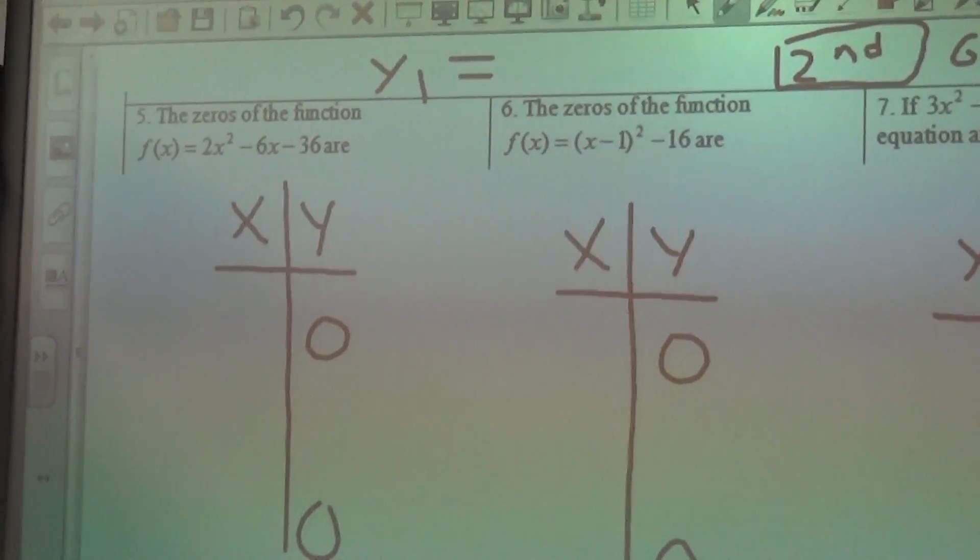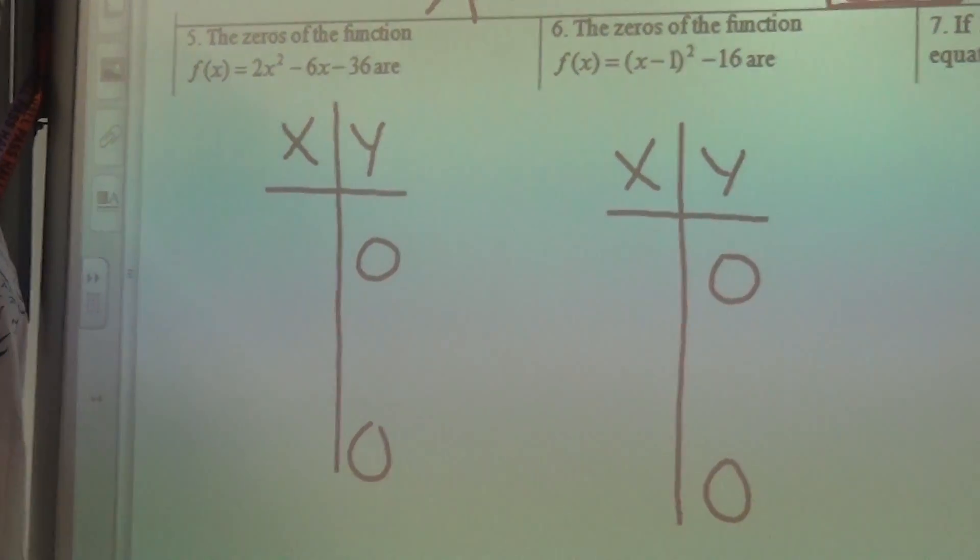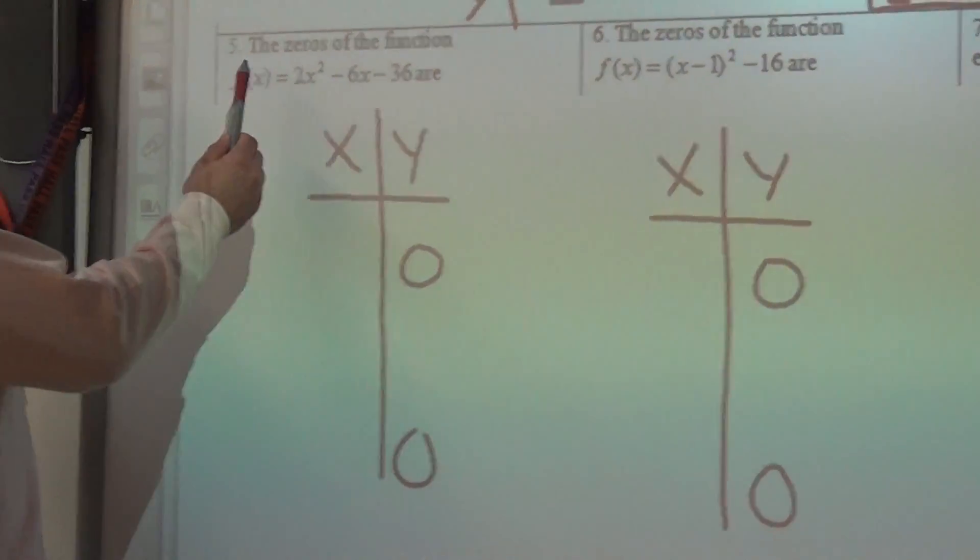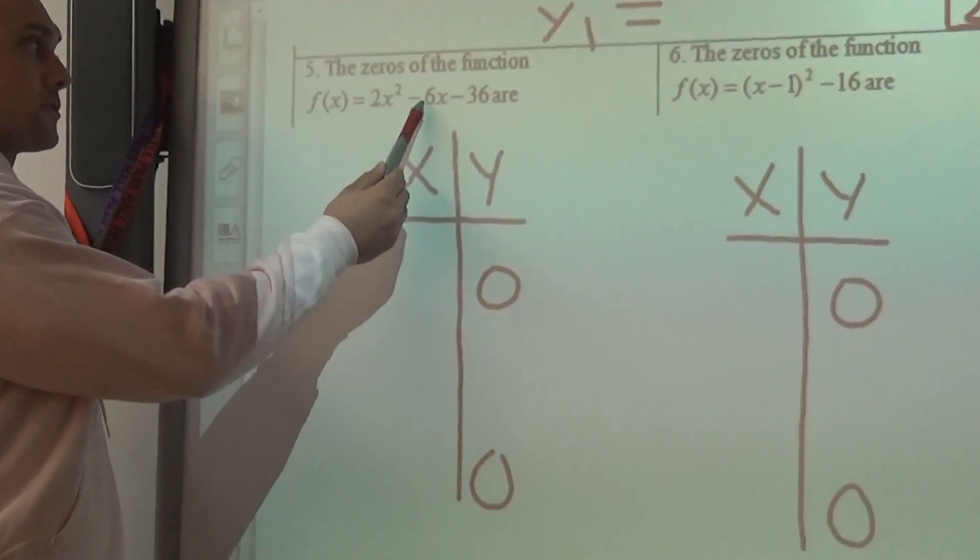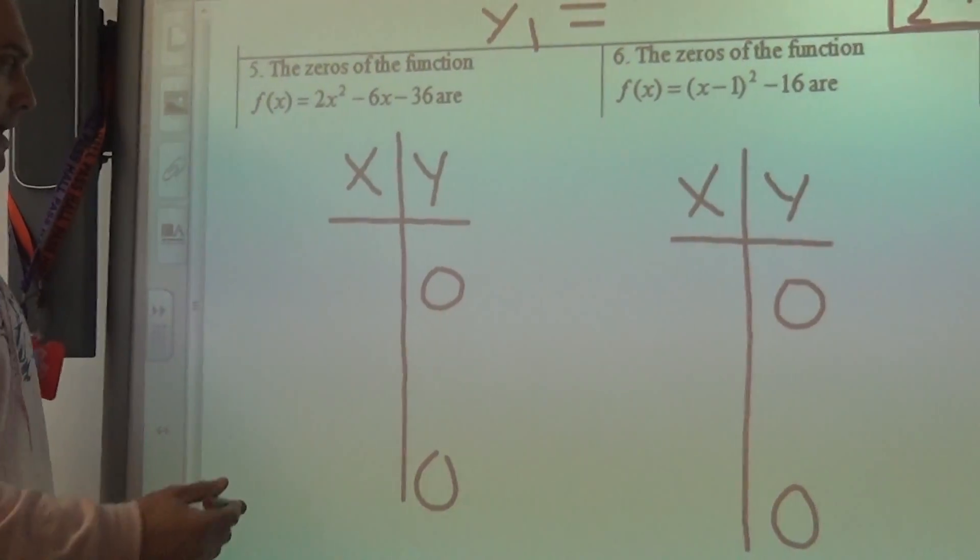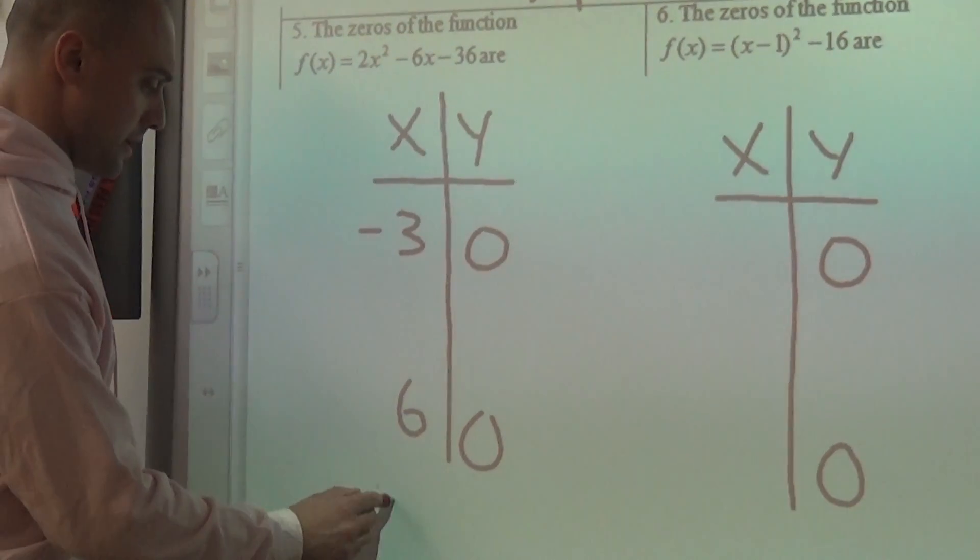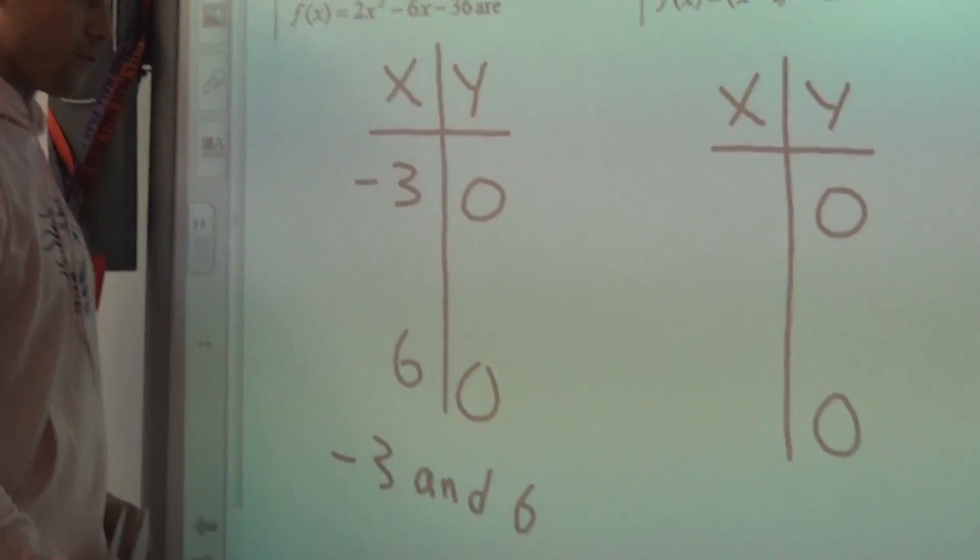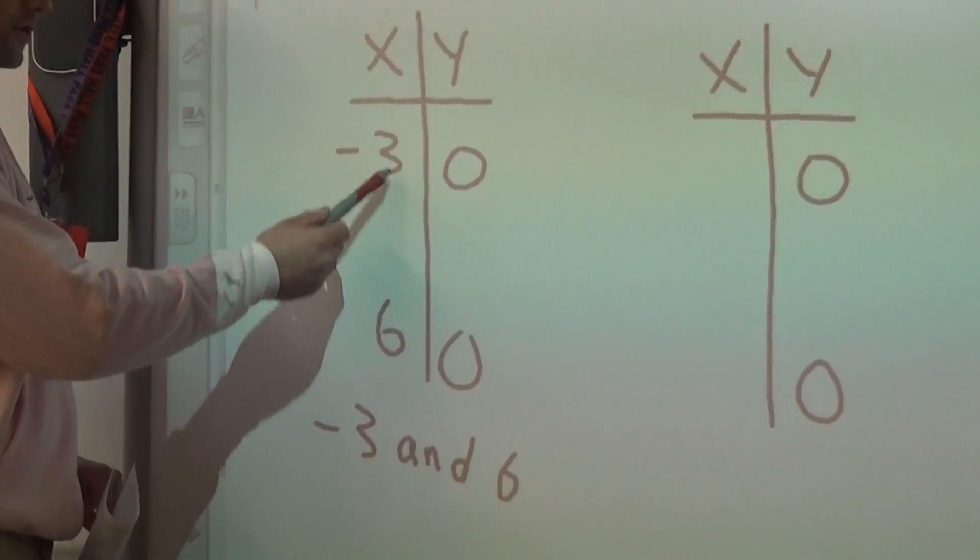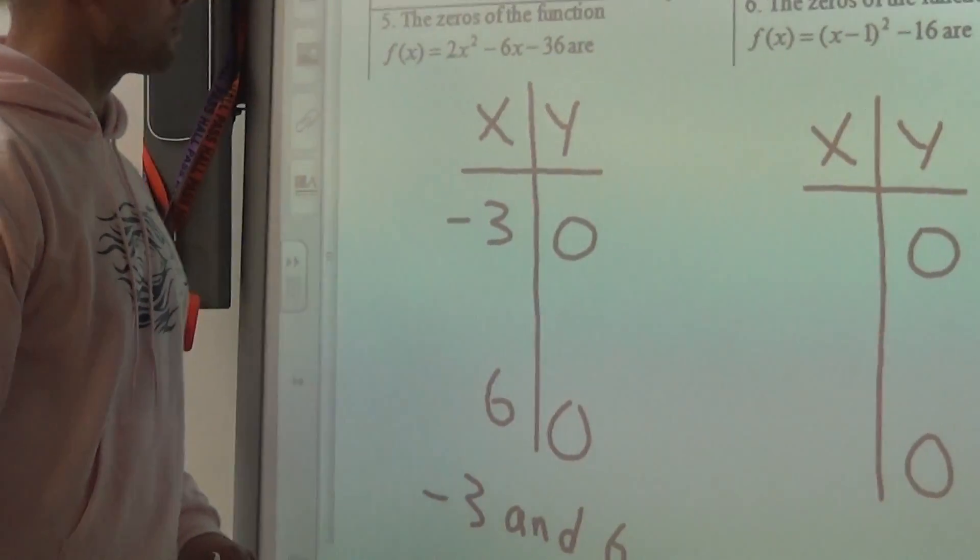So what you're looking for in each of these is where is the Y value equal to 0? So in number 5, we enter 2X squared minus 6X minus 36, we bring up the table, and we find our zeros are negative 3 and 6. We're just trying to find where are the two X values where Y is 0.